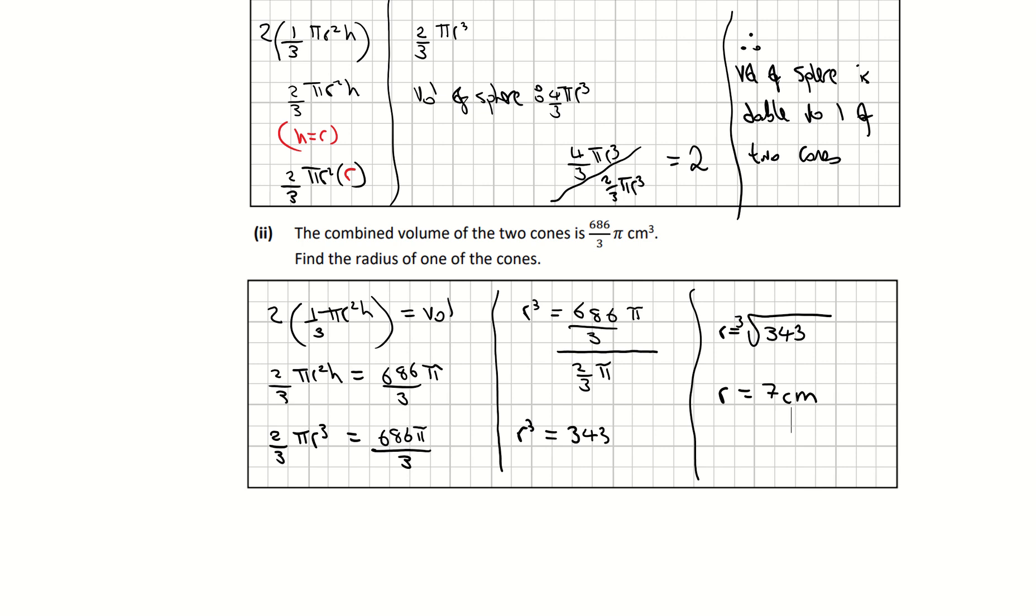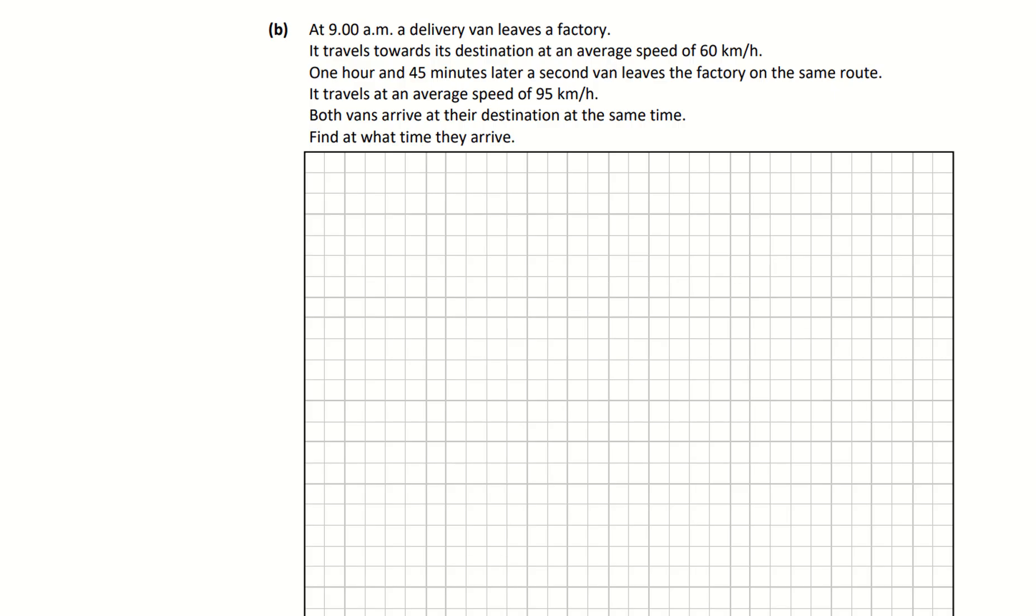Scrolling down now to part B. At 9 a.m. a delivery van leaves a factory. It travels towards its destination at an average speed of 60 kilometers per hour. An hour and 45 minutes later, a second van leaves the factory on the same route. It travels at an average speed of 95 kilometers per hour. Both vans arrive at their destinations at the same time. Find what time they arrive at. There's a bit of time, distance and speed really is what we're looking at here.